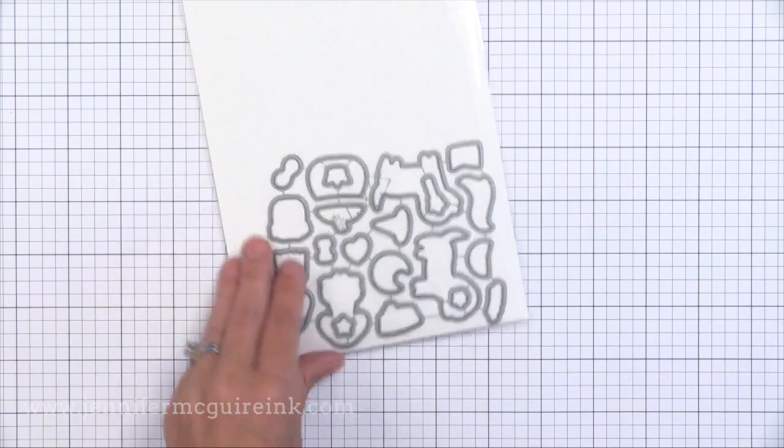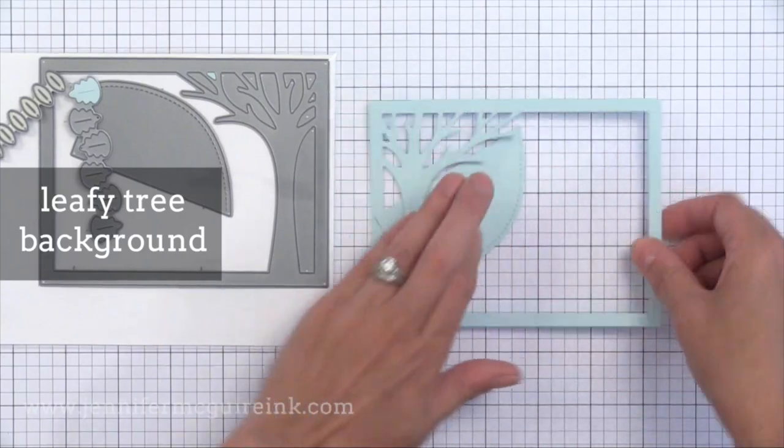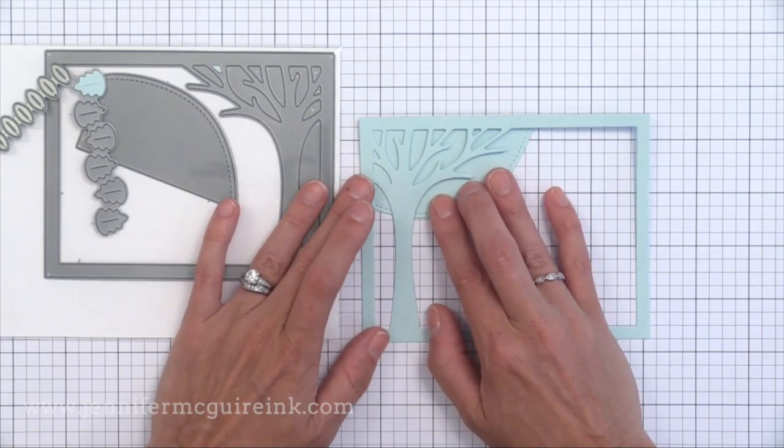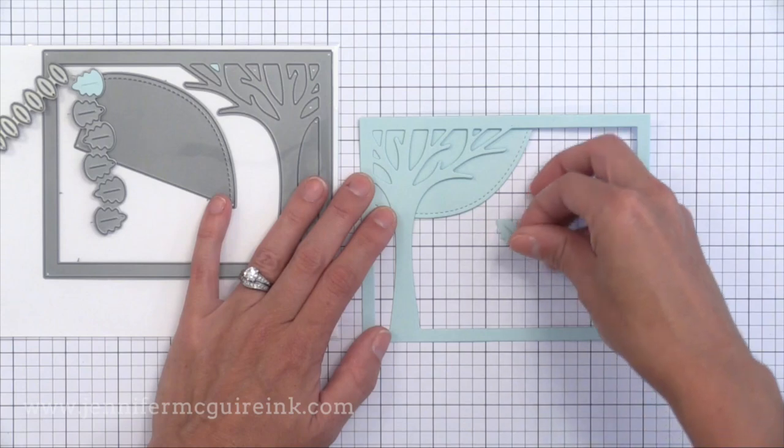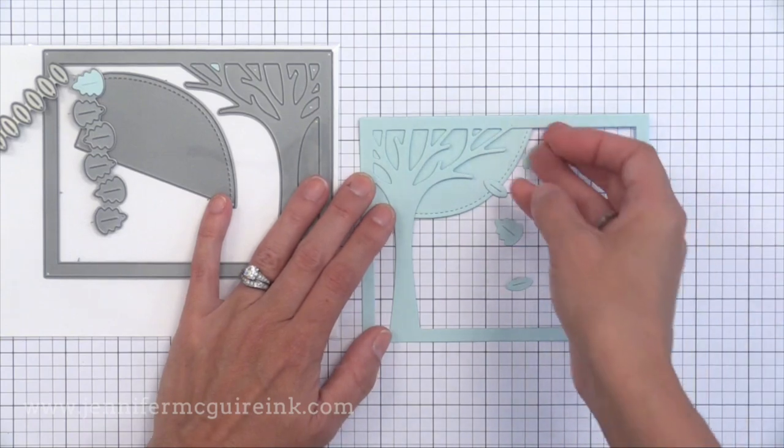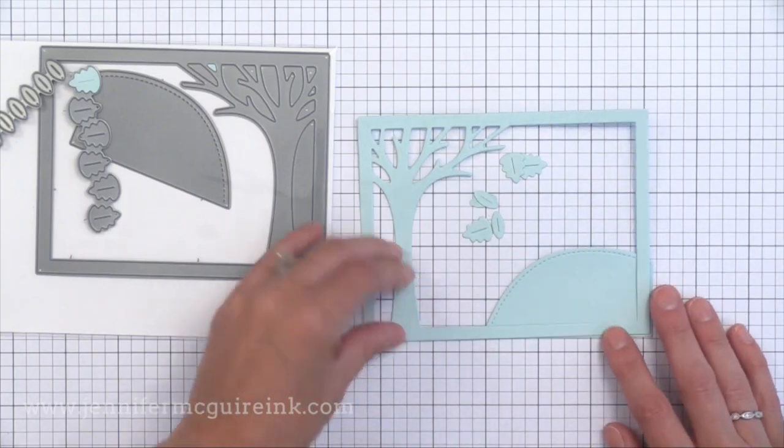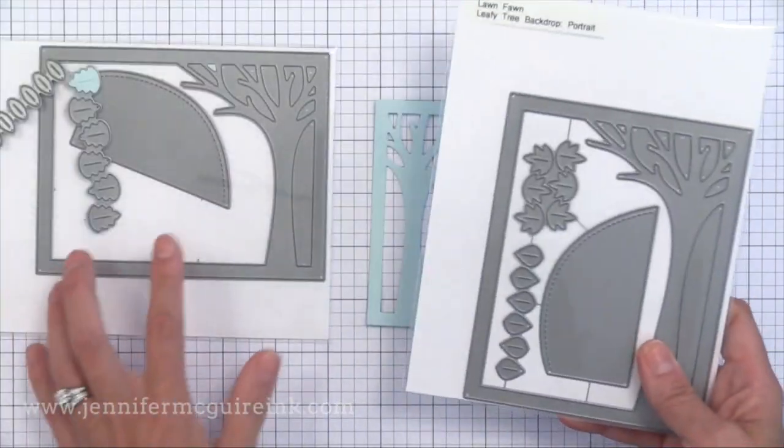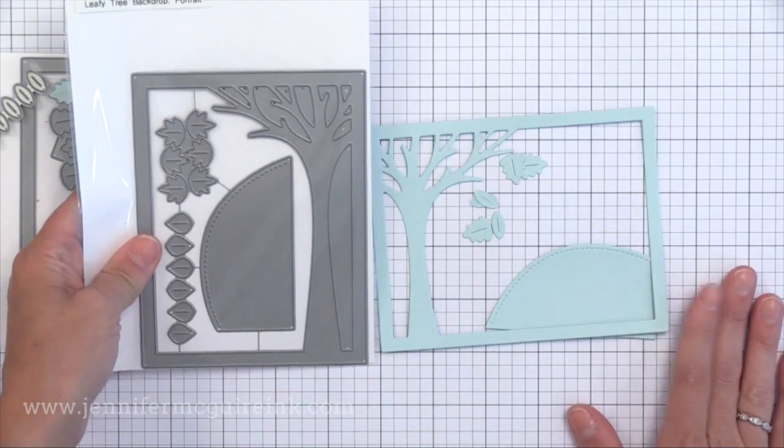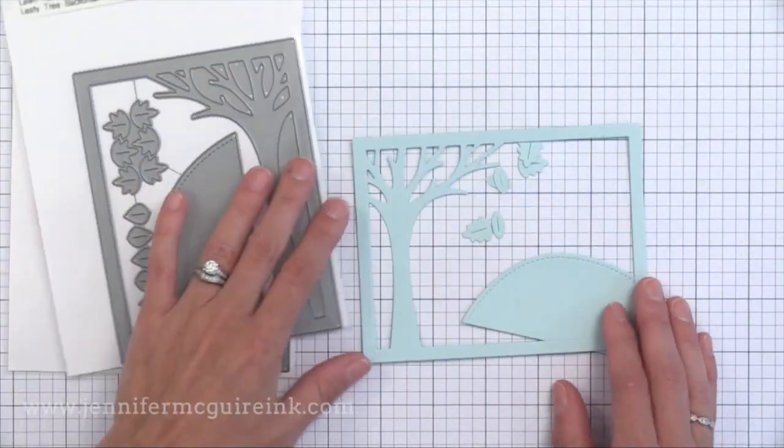Now it's time to move on to some of the dies in this release. And Lawn Fawn really does well thought out dies. First we have the leafy tree background landscape. This fits on the front of a four and a quarter by five and a half inch note card. It cuts this frame with the tree. Then you've got the piece that goes around the tree for the top of the tree and the little leaves that you can add. This would be great for a shaker card window with the leaves shaking around. Or you can put like a vellum backdrop and have snow coming down instead. If you prefer a tall card you could instead get the portrait one. So it's the same kind of idea but one is landscape and one is portrait.